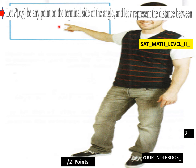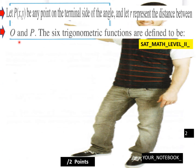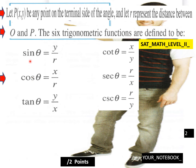Let P of X be any point on the terminal side of the angle, and let r represent the distance between O and P. The six trigonometric functions are defined to be: sine theta equals y over r, cosine theta equals x over r, tan theta equals y over x, cotan theta equals x over y, secant theta equals r over x, and cosecant theta equals r over y.